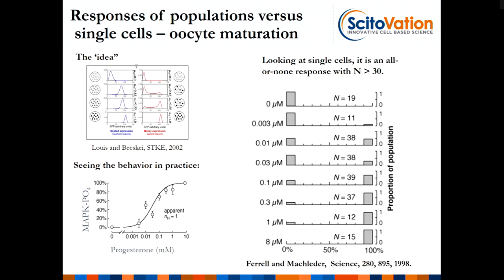John Tyson also looked at cell cycle characteristics. When they looked at MAP kinase phosphorylation as a function of progesterone — if you look at it in the population, you get a nice Michaelis-Menten curve, N equals one. If you look at single cells, you see that cells are either in one state or another. They made an estimate of this N value of 35. It just means it's a switch.